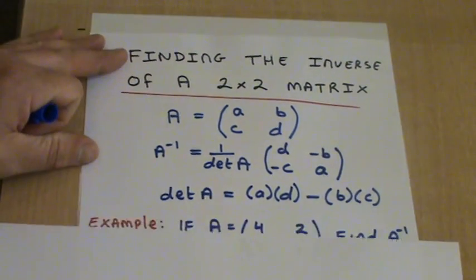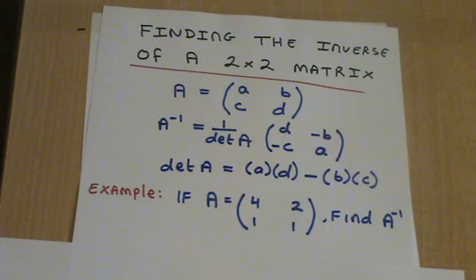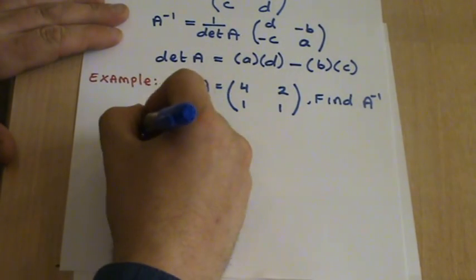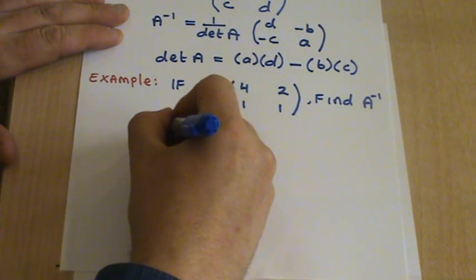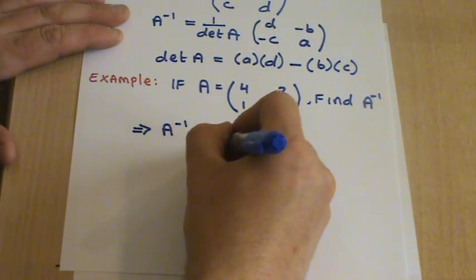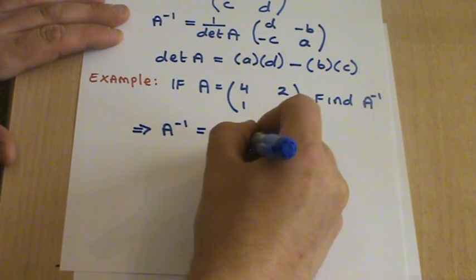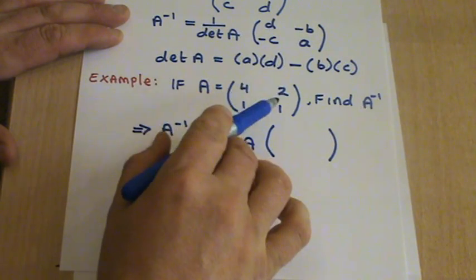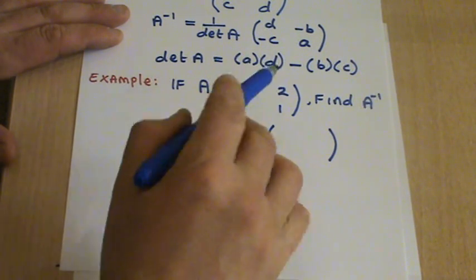So as an example, if we look at this matrix A, which is 4, 2, 1, 1, and we're looking to find the inverse of this matrix A. So here we'll write this as A inverse equals 1 over the determinant of A times, so the 4 and the 1, these are on the leading diagonal, and we'll swap these. So we're going to get a 1 on the top left and a 4 on the bottom right.